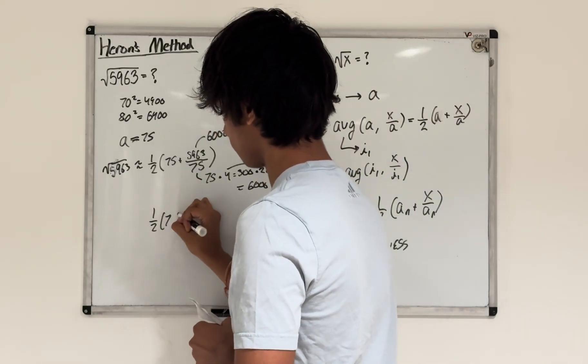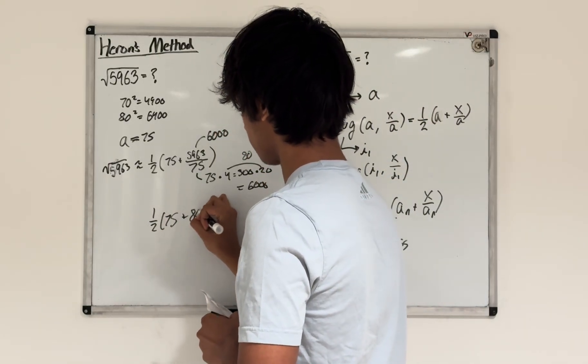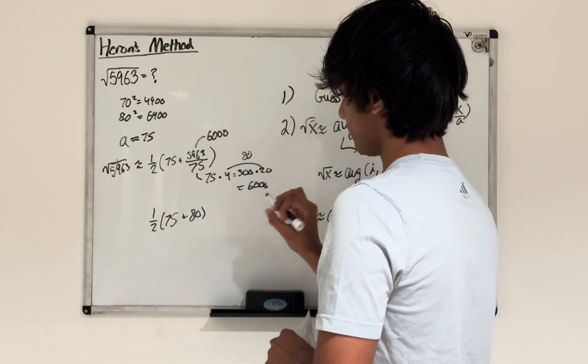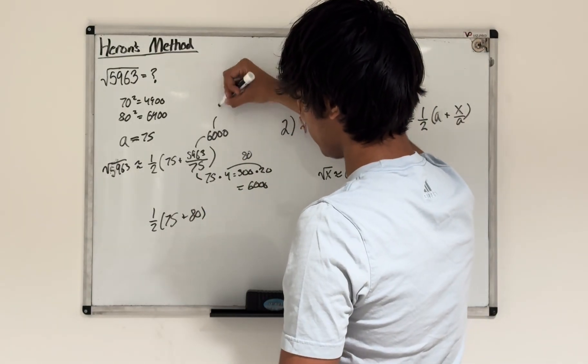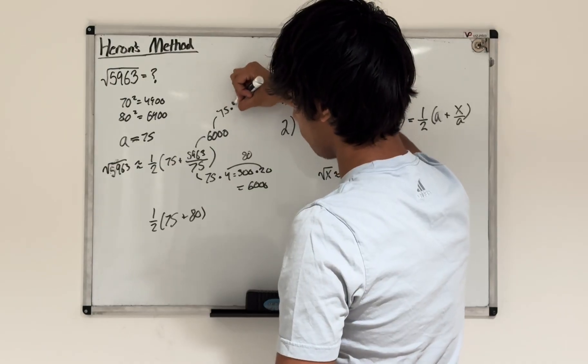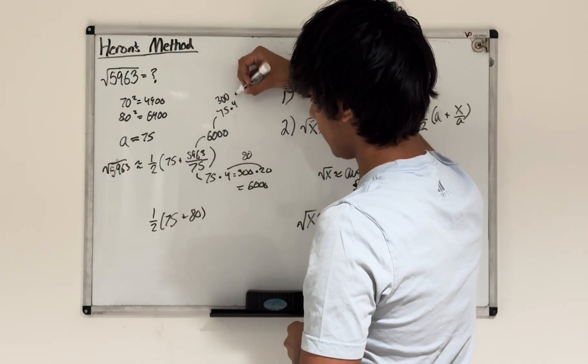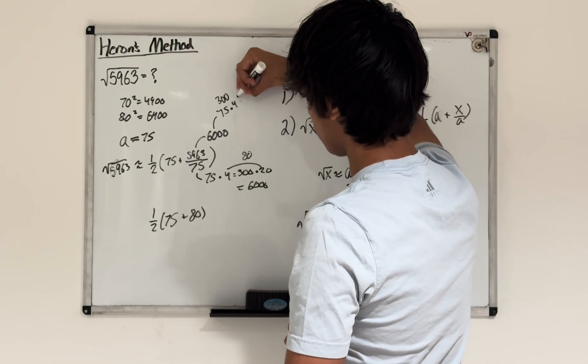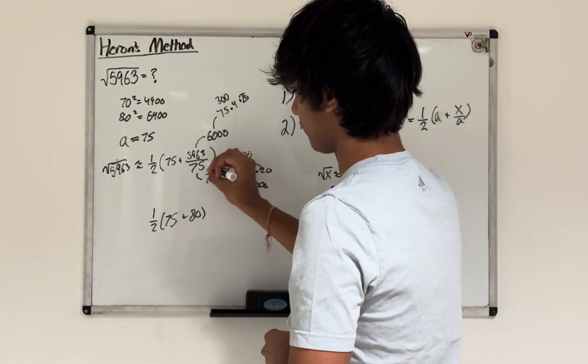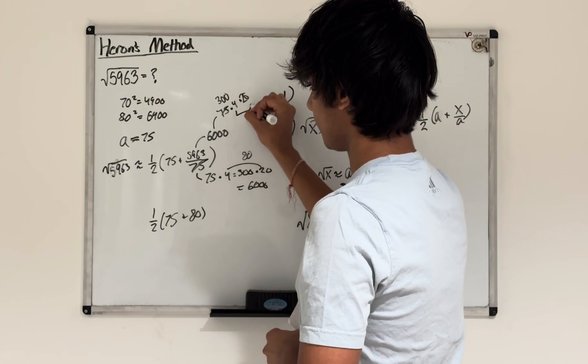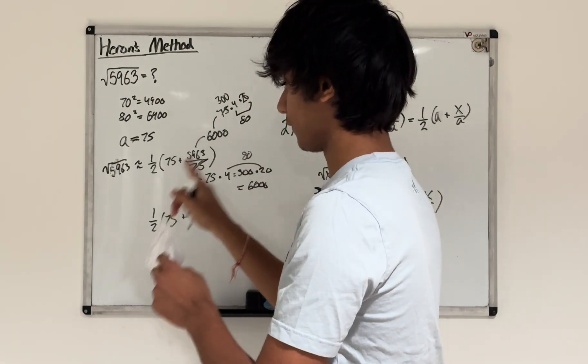Just to be more clear what I did here, basically what I did is I took 6,000 and I said 6,000 is equal to 75 times 4, which is 300. And if you multiply that by 20, you get 6,000. So the 75's cancel out, and you're left with 80. That's basically what I did right there.